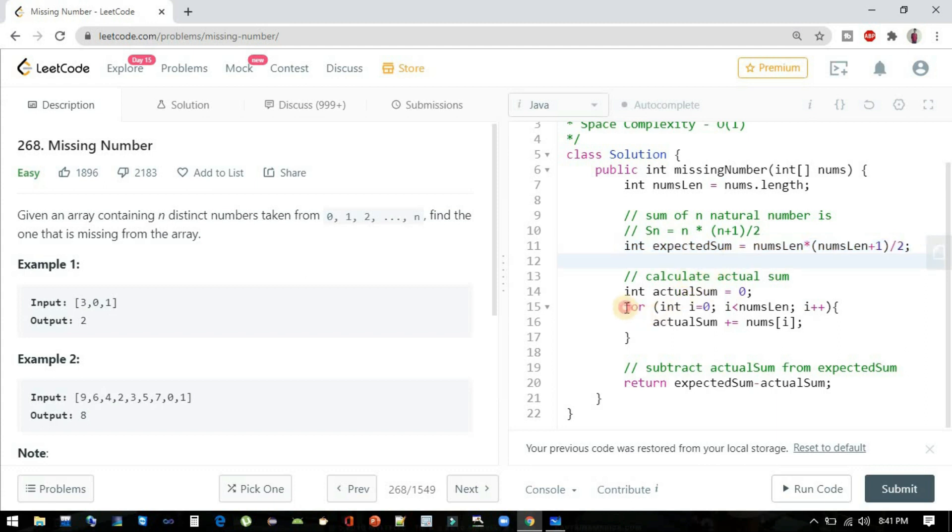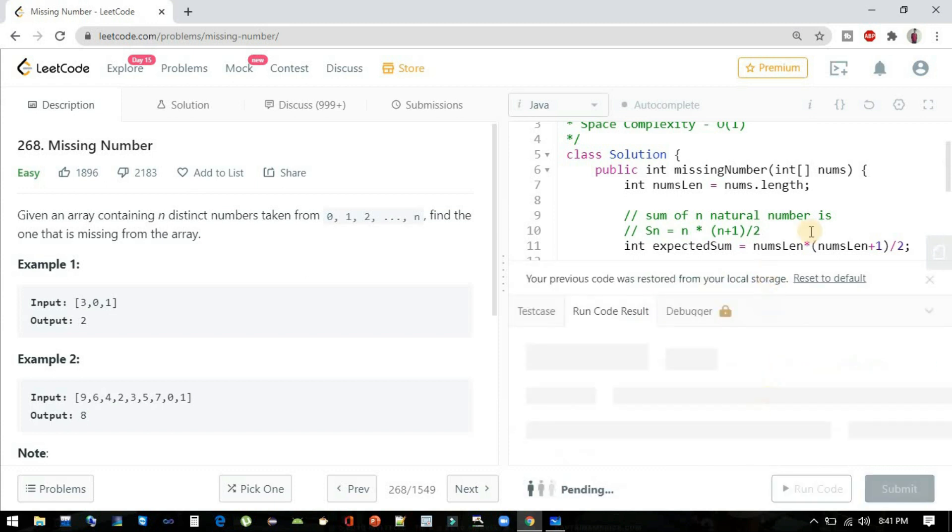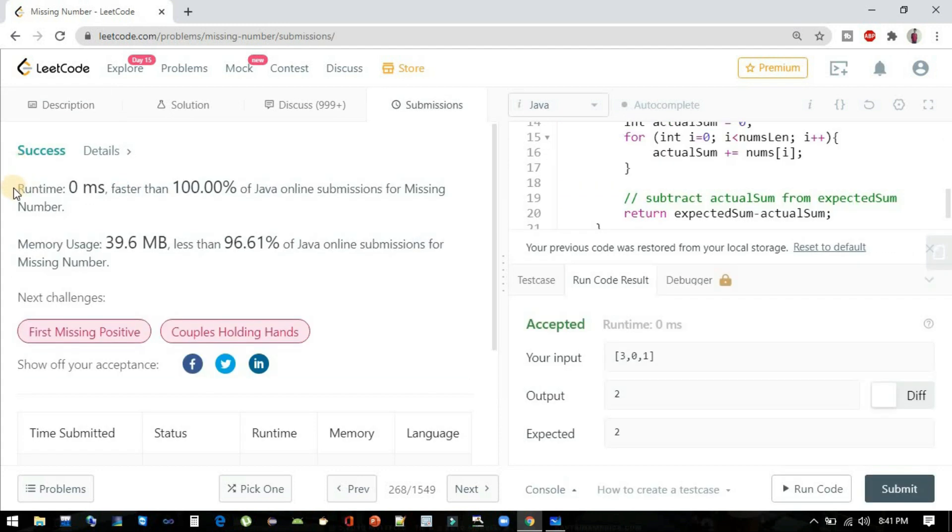And for the actual sum, we have to iterate our array and we have to add all elements into this variable. And at the end we will just subtract the expected with the actual sum. So yes, you can see. Now we will see the second approach.